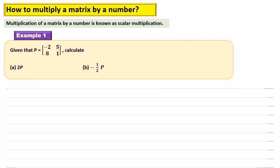Given that P equals negative 2, 5, 8, 1, calculate 2P. 2P means to multiply the matrix P by 2. So now you multiply all the elements by 2.